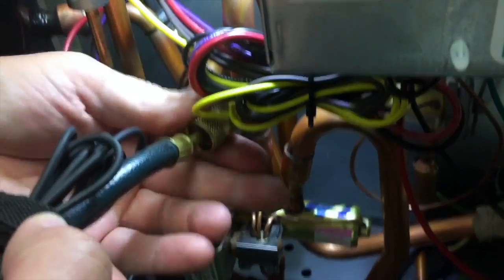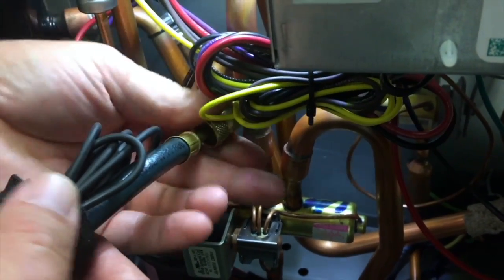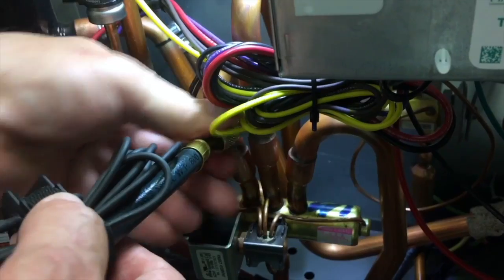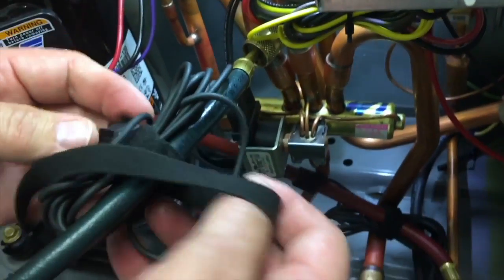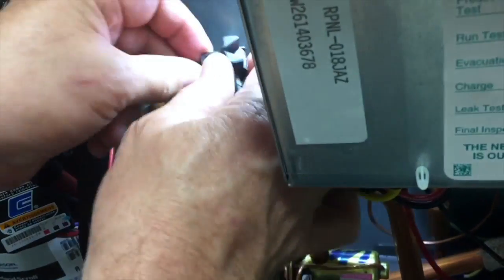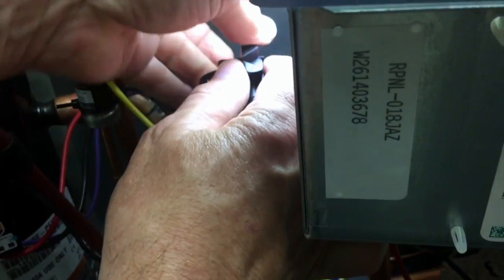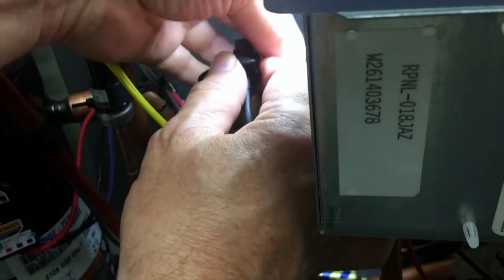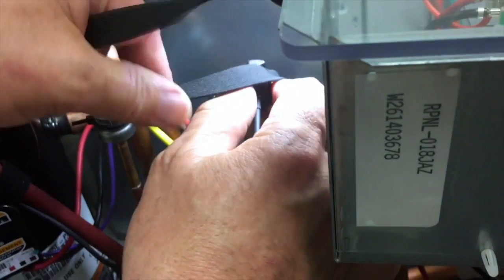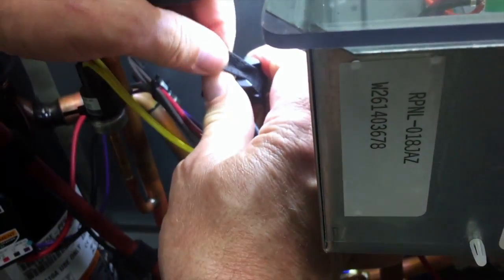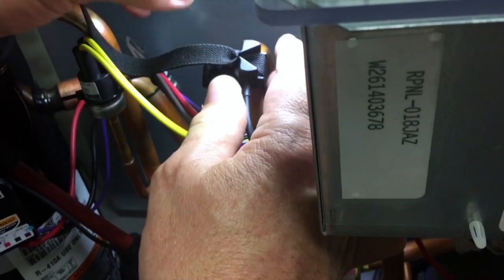The new refrigerants, especially like 410A, contain PoE oil, and PoE is very hygroscopic. So we want to make sure we're not getting moisture in the hose when it's disconnected. You always want to keep your hoses parked nice and tight. We'll just put this through and pull it through the V and pull it snug.